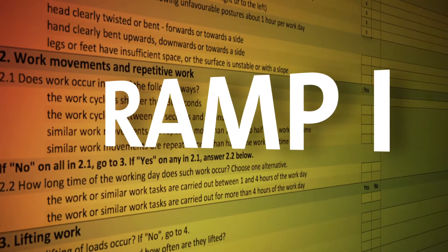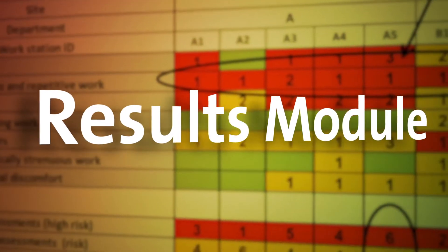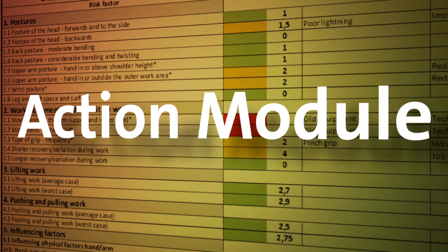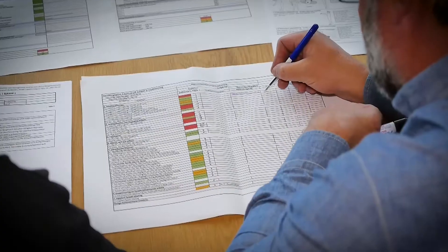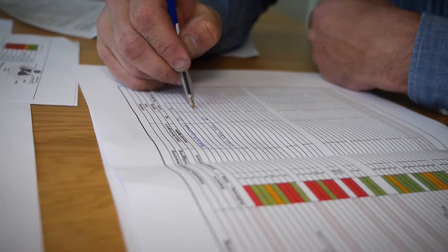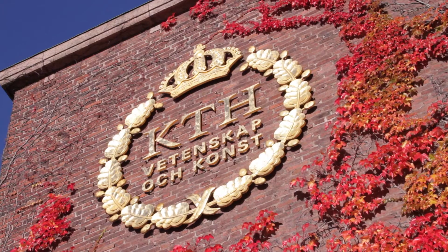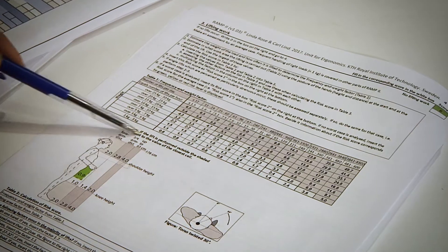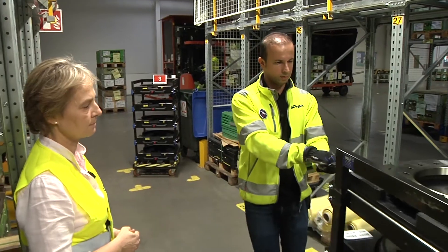You will get hands-on training on how to use each of the four modules in RAMP and become skilled in developing action plans and follow-ups to ultimately reduce the risks and improve the work environment at your company. RAMP is a result of a close collaboration between researchers at KTH and industry, so in these courses you will perform risk assessments based on authentic work situations.